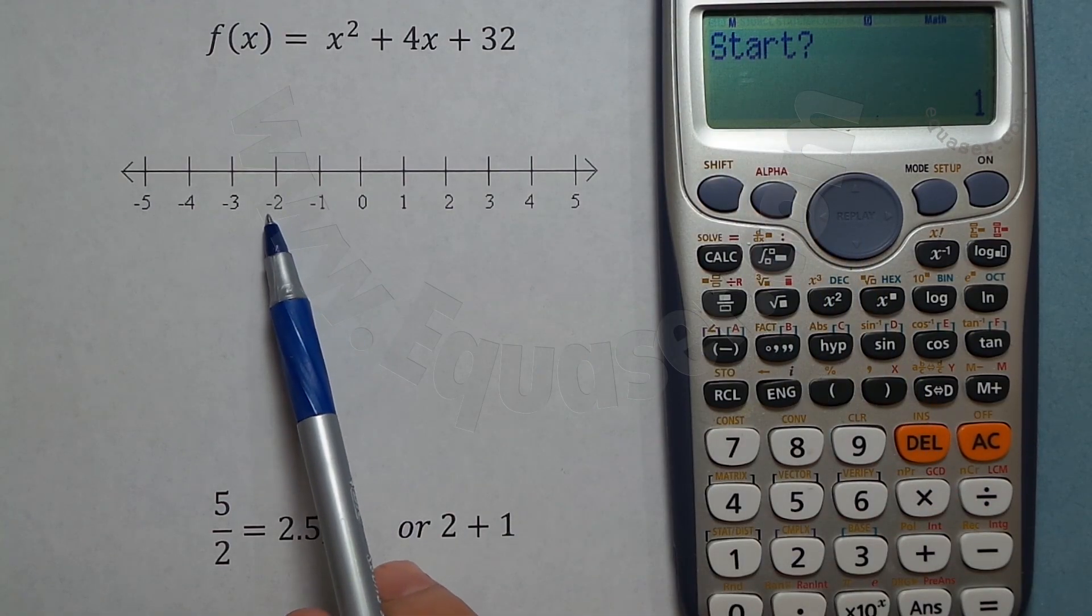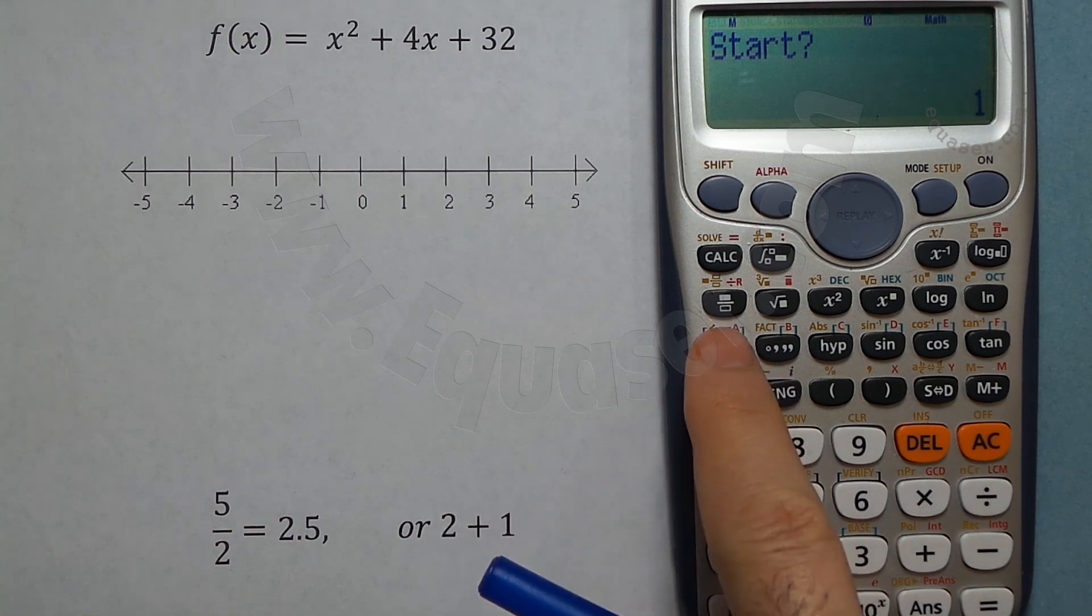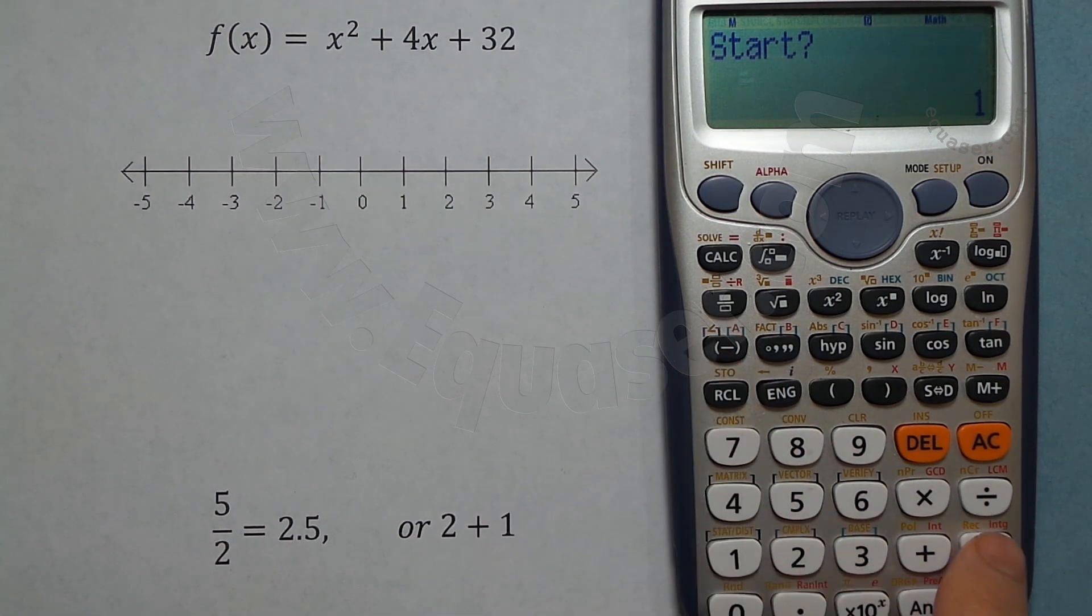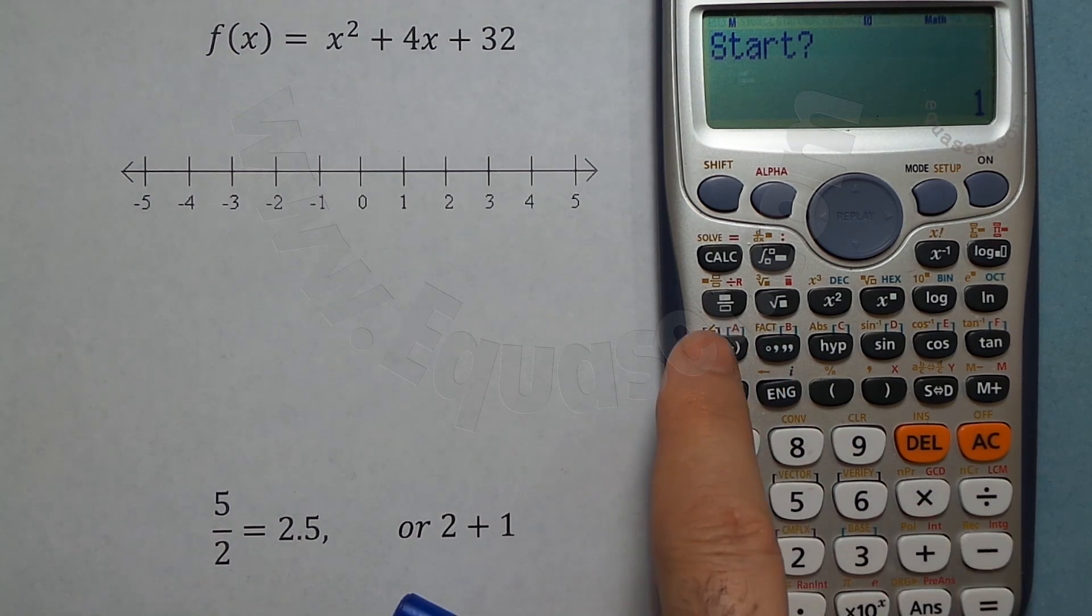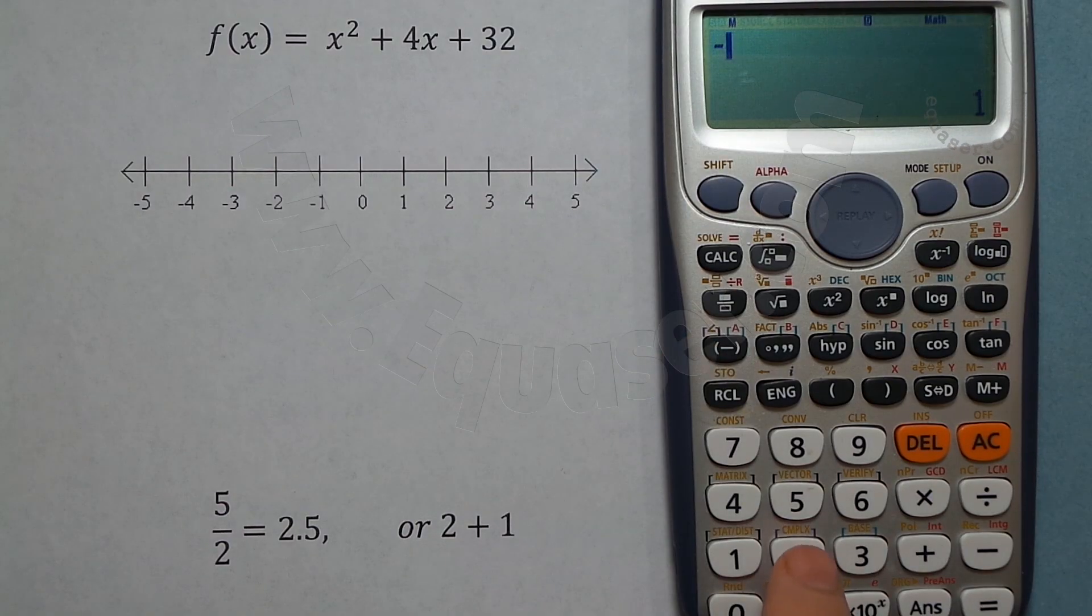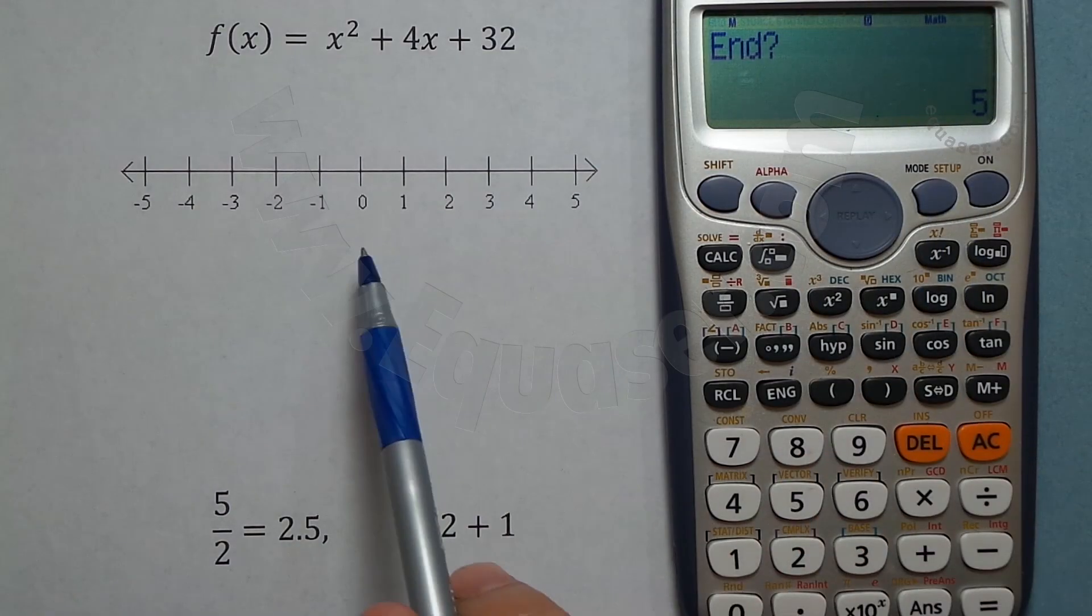I press minus - this minus, not this minus. This might work as well, but that's best practice. Minus 2, and then equal sign. Here I want to enter 1. Once I enter that value, it asks me for the step.